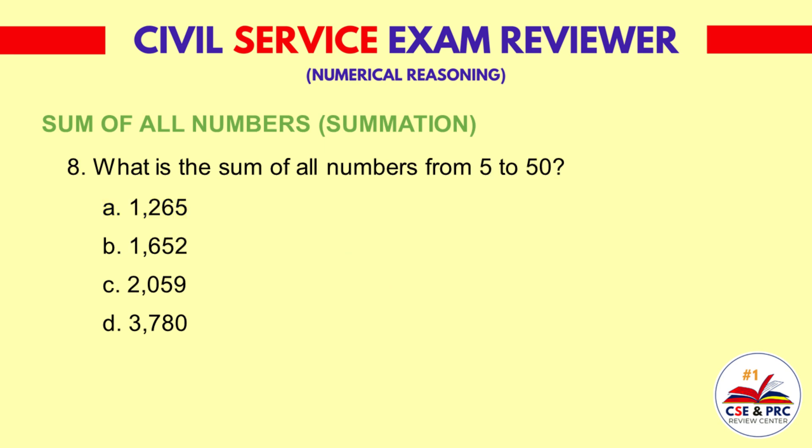Question 8: What is the sum of all numbers from 5 to 50? a. 1,265  b. 1,652  c. 2,059  d. 3,780